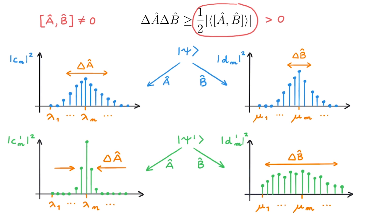Overall, this means that the representations of a given state in two different bases given by two non-commuting operators are inversely related. The narrower the distribution is for one operator, the wider it needs to be for the other, and vice versa — all to ensure that the product of their root-mean-squared deviations is larger than the lower bound set by the Heisenberg uncertainty principle.